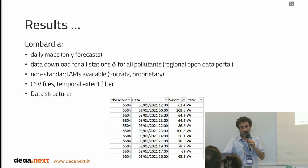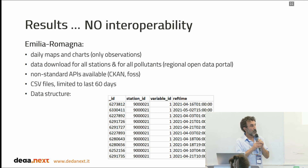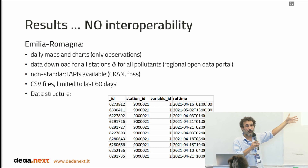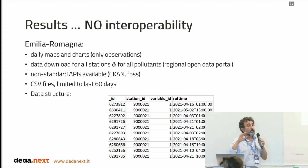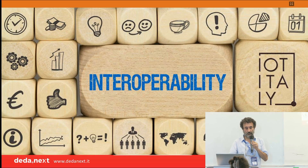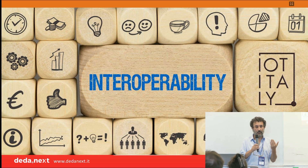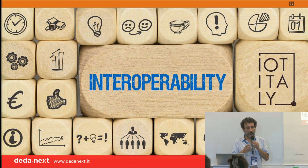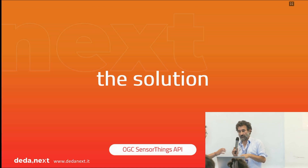Socrata is the solution identified by Lombardia for the open data portal. Emilia Romagna had a different data structure, a different data model for providing the same information — the same data about PM10, PM2.5, NO2, and so on — while the Veneto region was not, and still is not, making their data available. So what we explained to the municipality of Ferrara was that we definitely needed a solution for making all this data interoperable by ingesting them into a SensorThings API server. I leave the floor to Luca who will explain the solution.